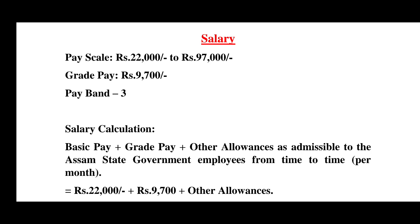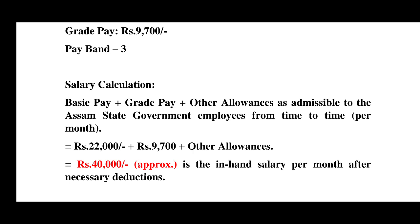If we calculate the pay scale, it is 22,000 plus grade pay of 9,700 plus other allowances. After all deductions, the salary per month comes to approximately 40,000 per month. So approximately 40,000 is the starting salary as an Inspector of Statistics after necessary deductions.